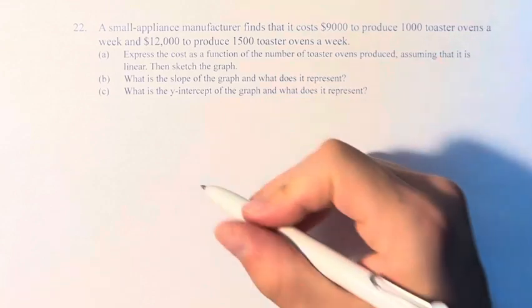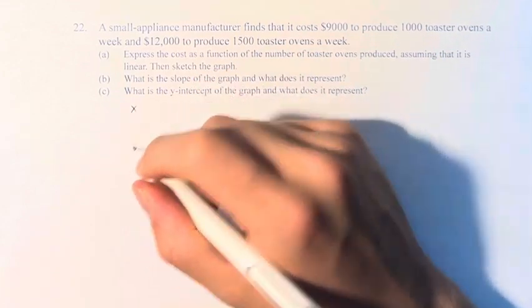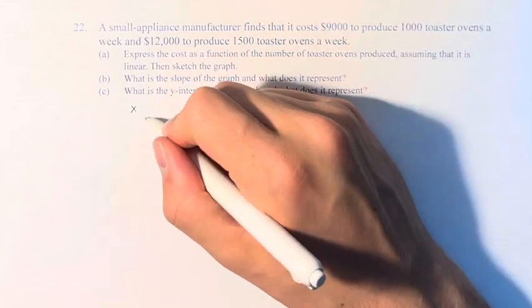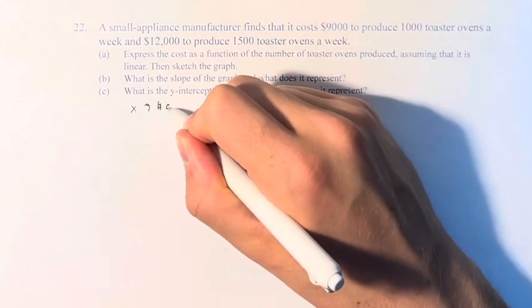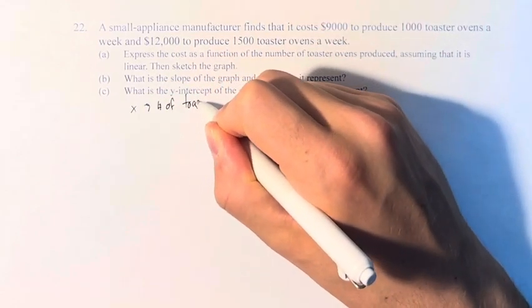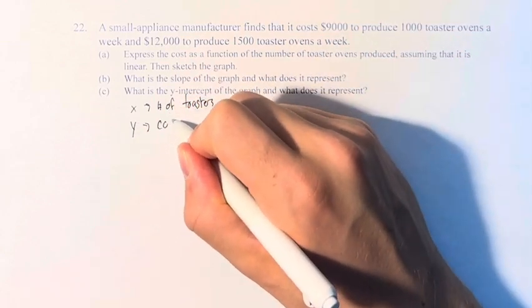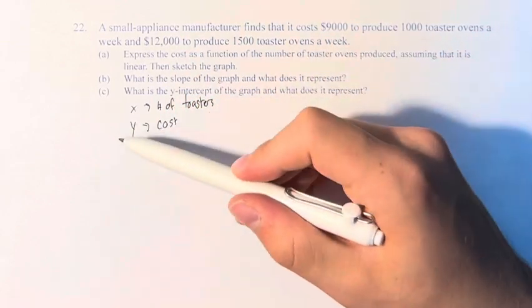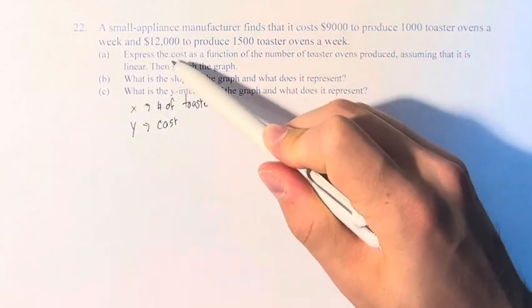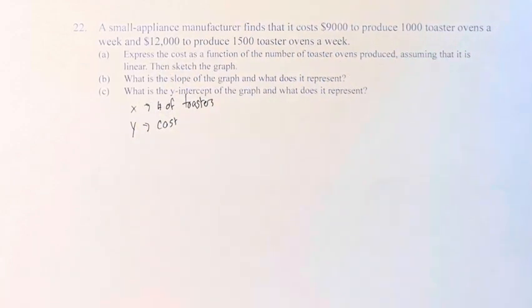We need the two points. Our x variable is going to be the number of toaster ovens. And our y variable is going to be the cost, because it's standard to have y in terms of x, and this is the cost in terms of the number of toaster ovens produced.